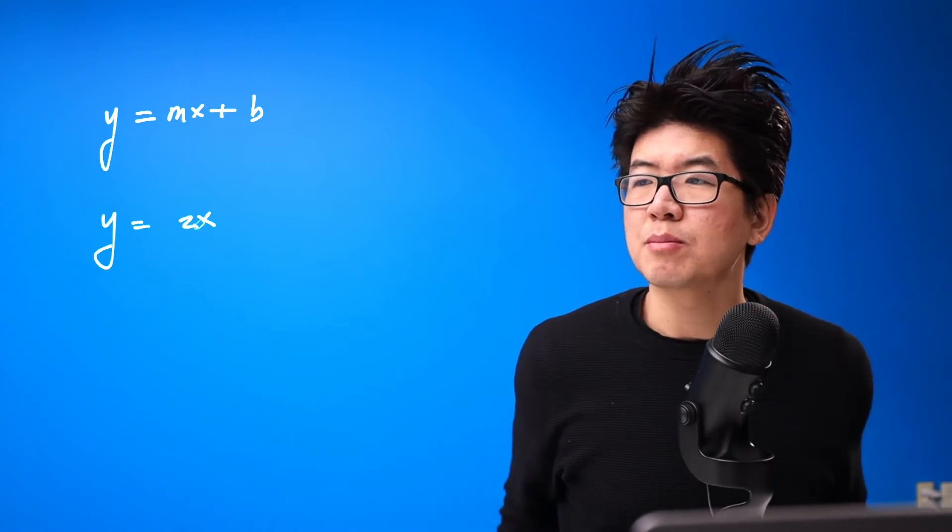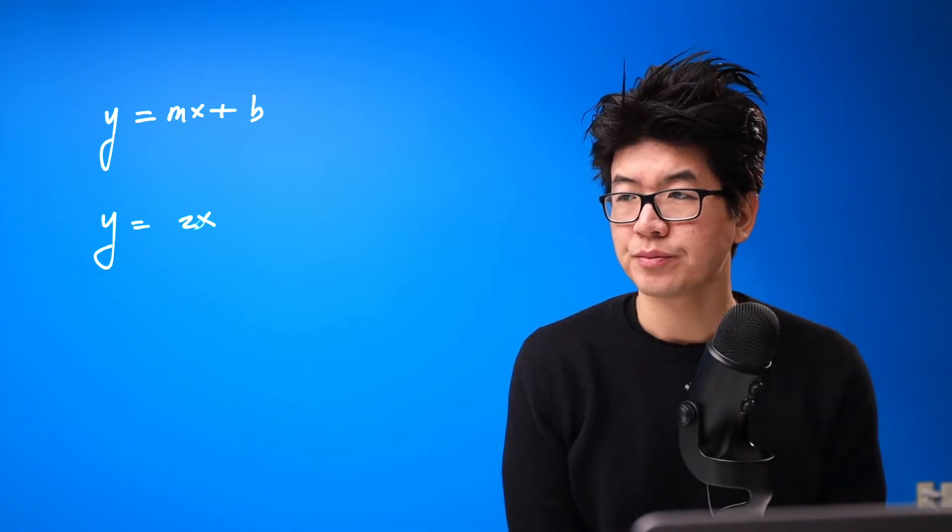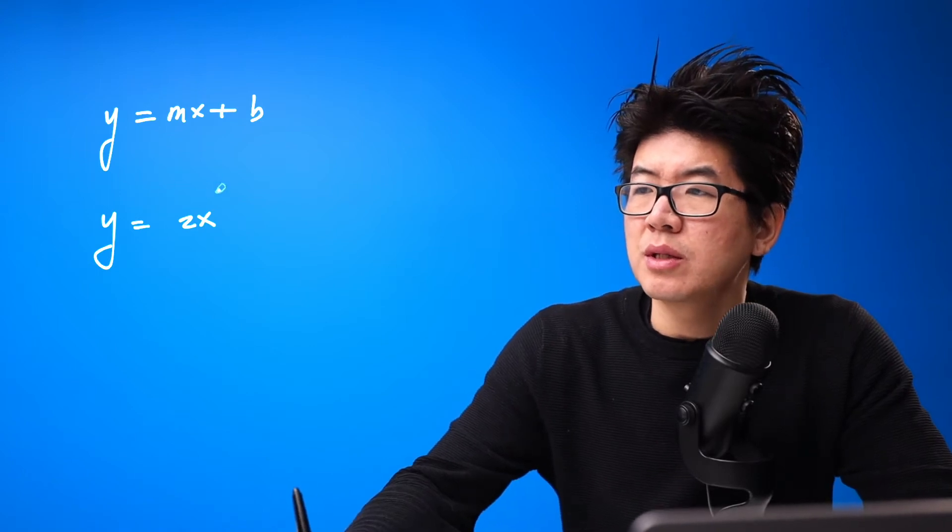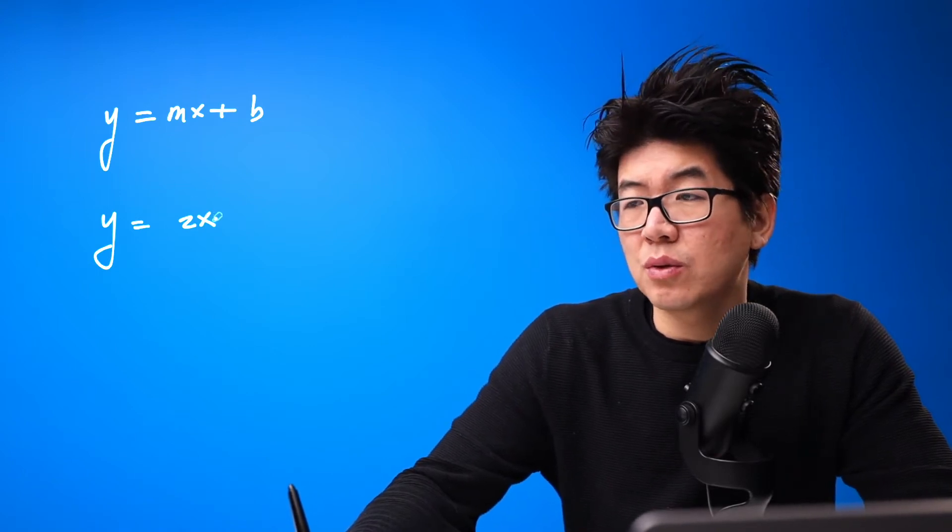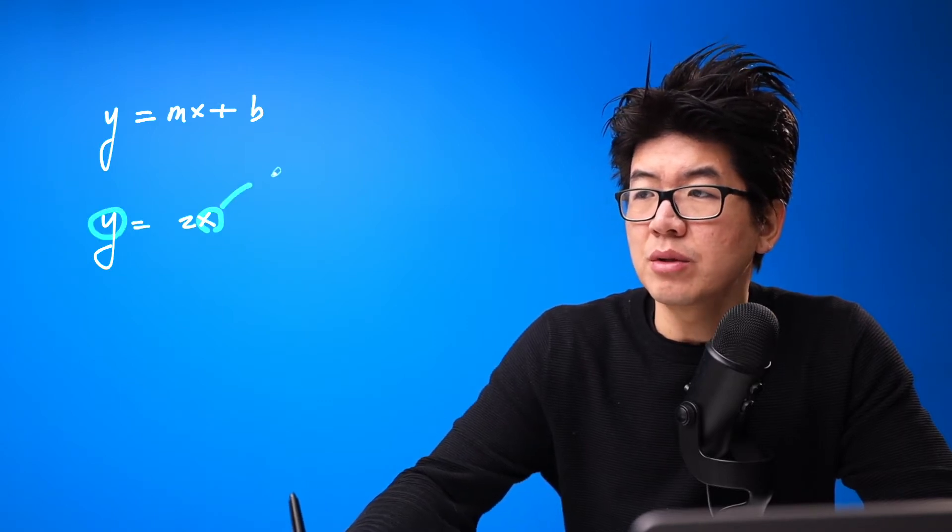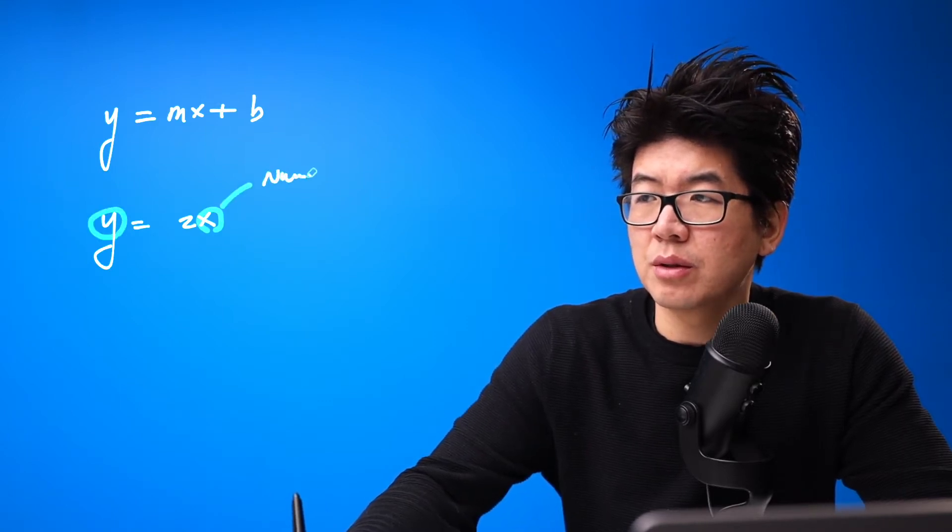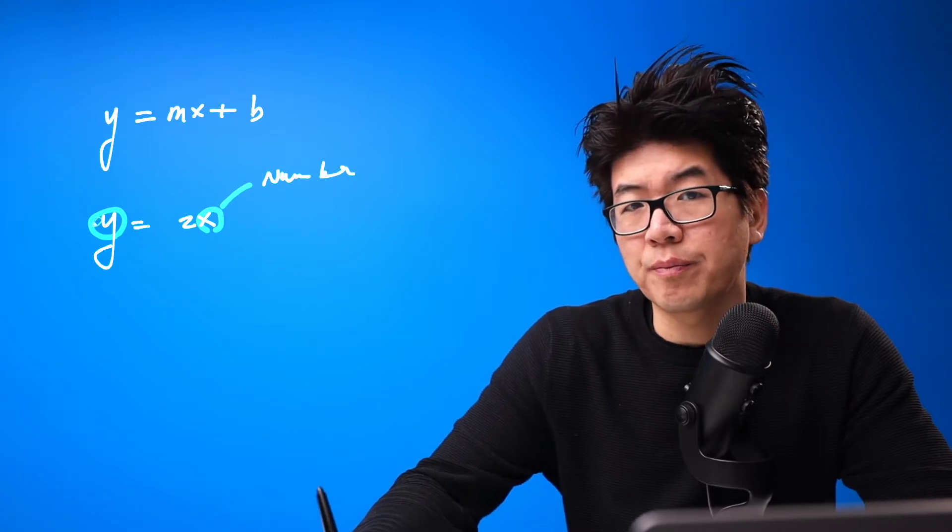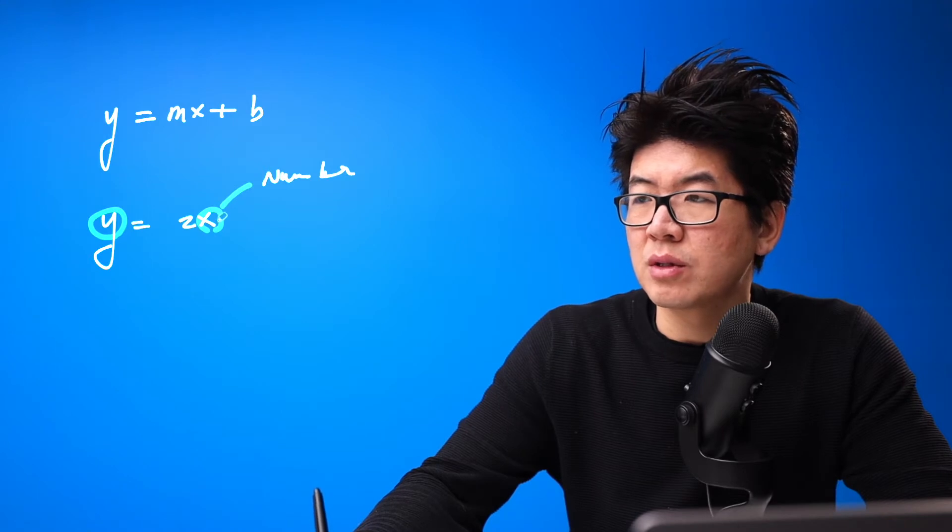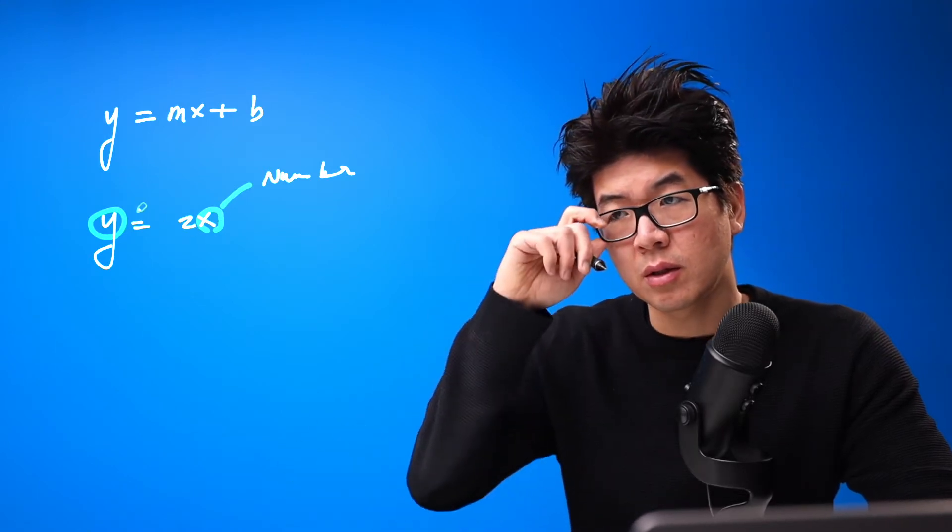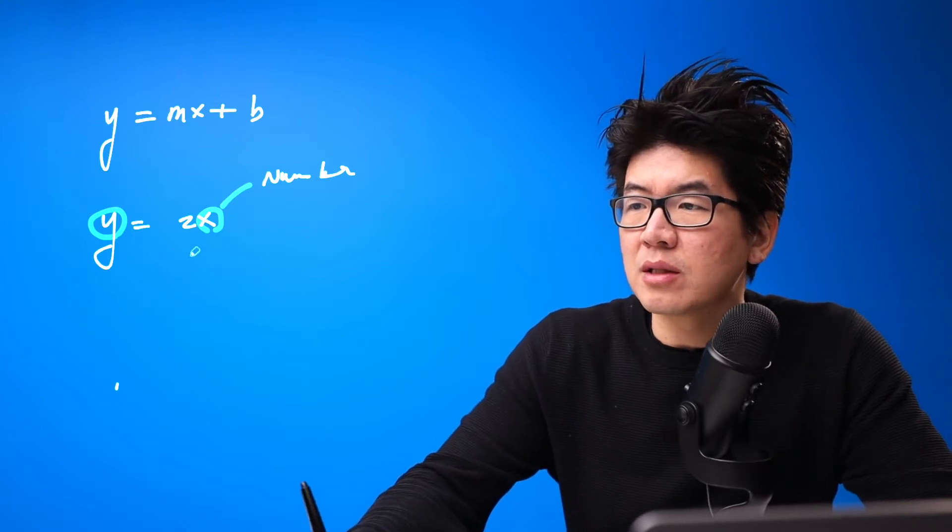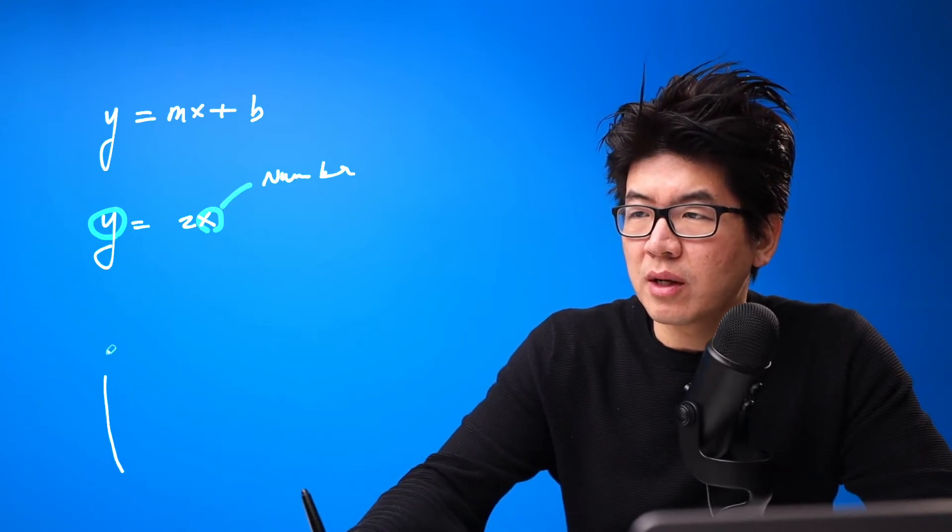Something as simple as y equals 2x—what is this about? It's telling you a story about a relationship between x and y. x is a number, and so is y. What we're doing to the x value is doubling it to get y.